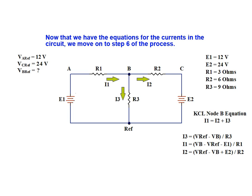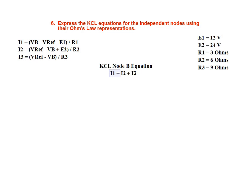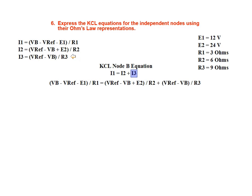Now that we have the Ohm's law equations for the currents in the circuit, we move on to step 6 of the process. In this step, we express the KCL equation for the independent node, node B, using its Ohm's law representation for currents. We begin by replacing the I1 value with its equivalent V over R representation. Similarly, we replace the I2 value in the KCL node B equation with its Ohm's law representation. Lastly, we replace the I3 value with its Ohm's law equivalent to complete the modified KCL equation.